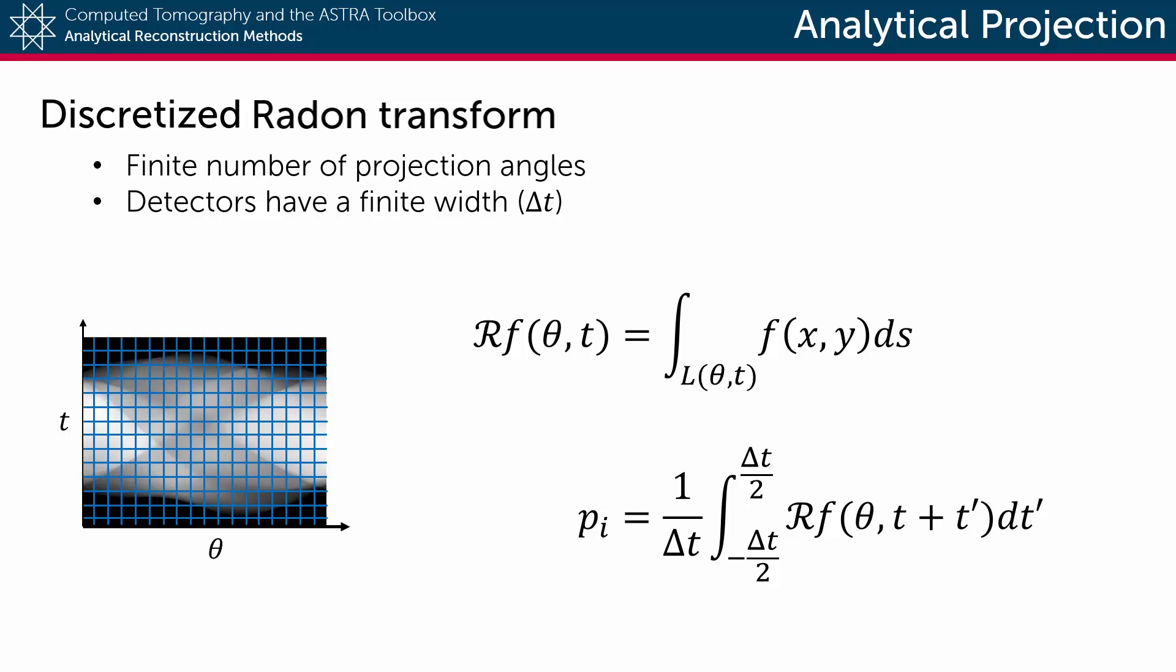So in the end, we end up with the following discretization of the Radon transform. The index i refers to a pixel on the sinogram image and corresponds to a single value for θ and t.